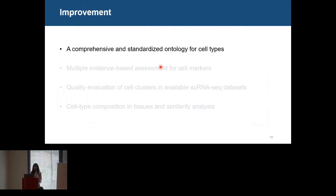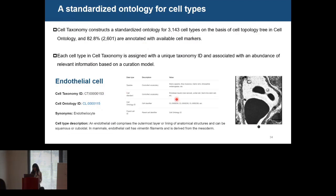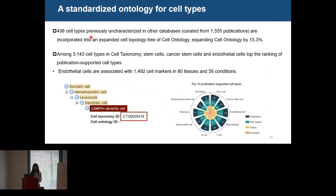Cell Taxonomy built a standardized ontology for 3,143 cell types based on the cell topology tree in cell ontology, and up to 82% of the cell types are annotated with available cell markers. Each cell type is assigned a unique taxonomy ID and associated with abundant relevant information. About 400 cell types previously uncharacterized in other databases are newly incorporated into the expanded cell topology tree of cell ontology, expanding it by about 15%. For example, the LAMP3 dendritic cell, a newly identified cell type, is placed as a subclass of the DC cell with a unique novel cell taxonomy ID.